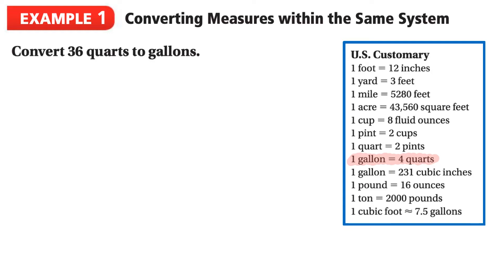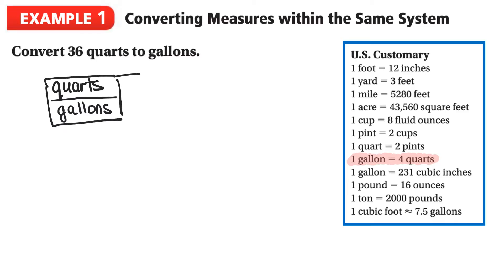The next step is to create a ratio table. I'll put quarts on the top and gallons underneath. In my first column I'll take the information from the chart: quarts is four and gallons is one. This column shows what is equivalent - one gallon equals four quarts.